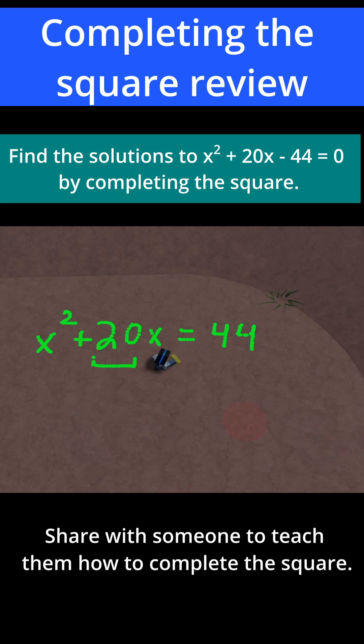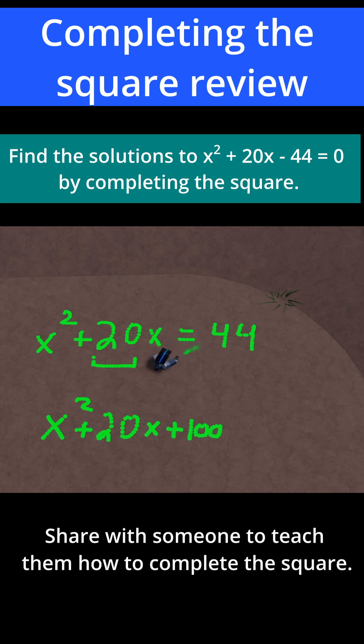So if I do that, I'll have x squared plus 20x plus 100 is equal to 44 plus 100, and then 44 plus 100 is just 144.